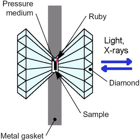Laser heating is continuing to extend the temperature range that can be reached in a diamond anvil cell but suffers two significant drawbacks. First, temperatures below 1200 degrees Celsius are difficult to measure using this method. Second, large temperature gradients exist in the sample because only the portion of sample hit by the laser is heated.